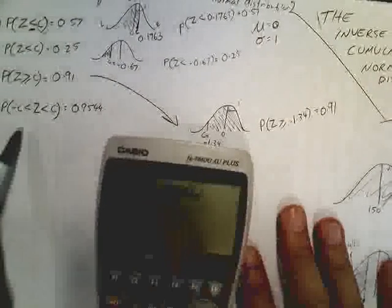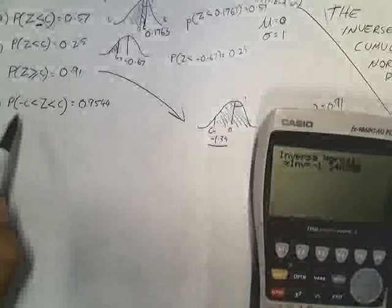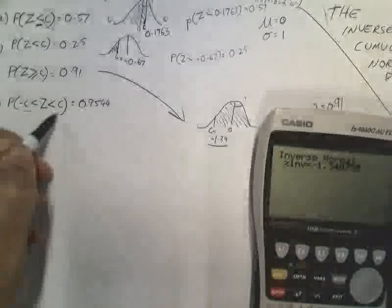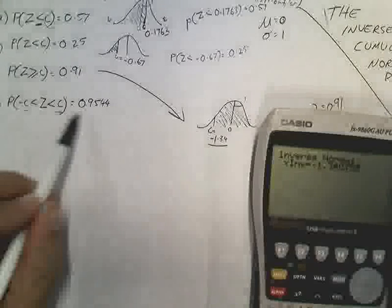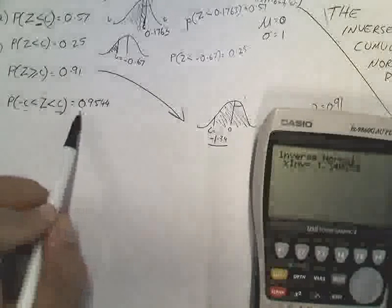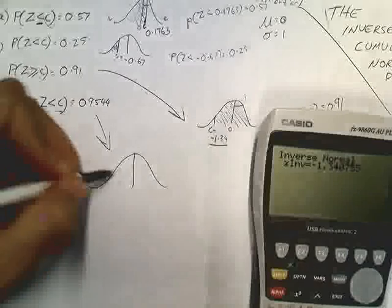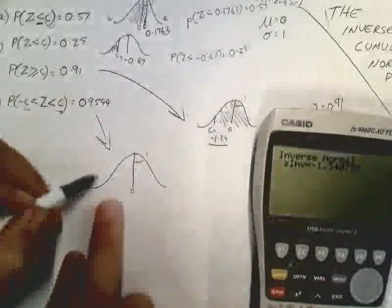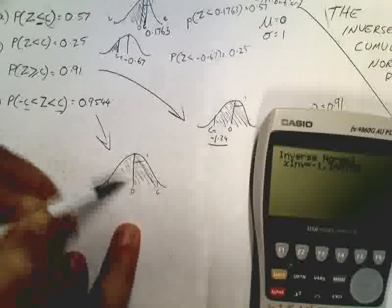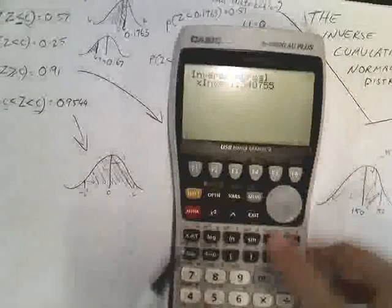Okay, now this last one. It's written quite interestingly, but it's an example of a center tail. The probability that negative C is less than Z, which is less than C, is equal to 0.9544. So, these C values are the same. But the probability of something being between those two... one's negative, one's positive. But the magnitudes are the same. The probability that something being between those two values is 95.44%. So, quite high.